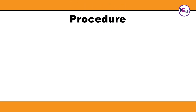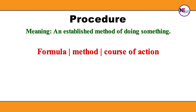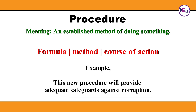Procedure. An established method of doing something. Synonyms: Formula, Method, Course of action. Example: This new procedure will provide adequate safeguards against corruption.